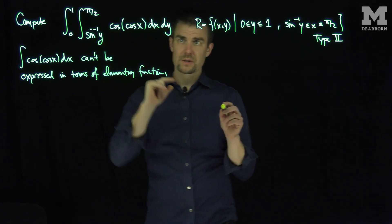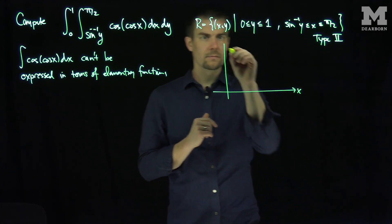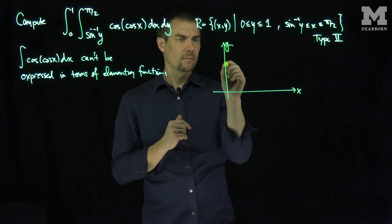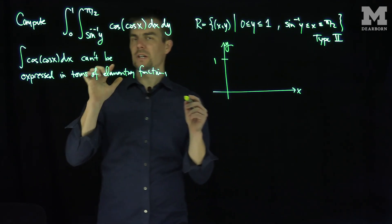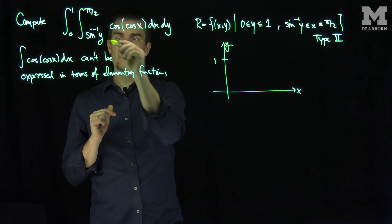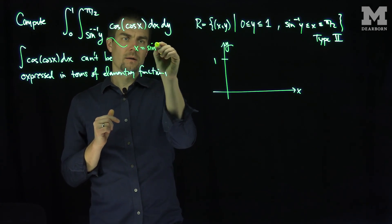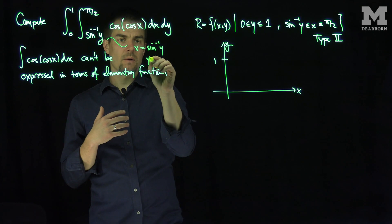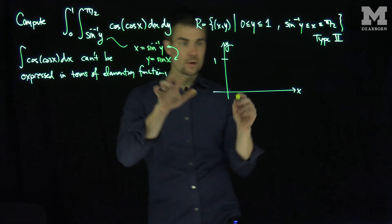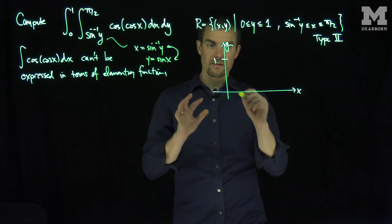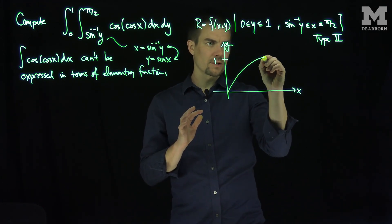Let's plot this region and see what we get. Our y is going to go between 0 and 1, and I have x equals inverse sine of y. If x equals the inverse sine of y, that's the same as saying y equals sine of x — these relationships are equivalent. I'm more used to drawing the graph of sine of x, so sine of x looks like this.